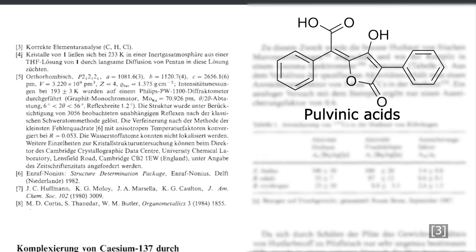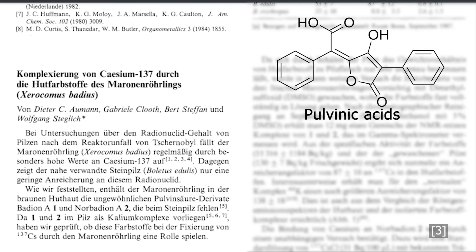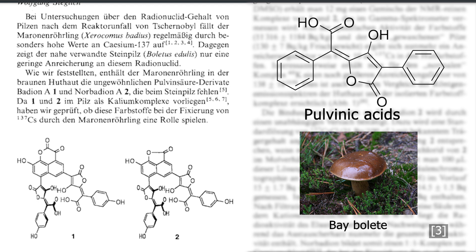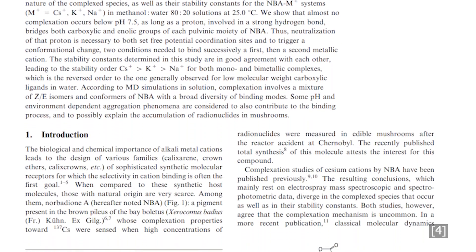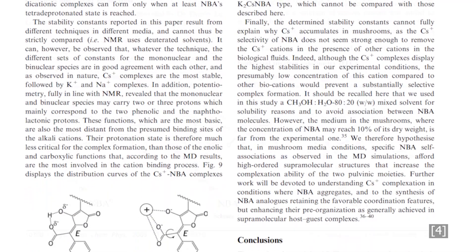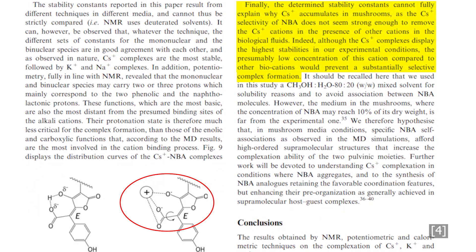Cesium-137 enters through pulvinic acids — compounds often orange or yellow, visible in the bay bolete, for example, which accumulates the highest amount of radiocesium. The color, however, is not a good indicator of radioactivity. In the bay bolete, derivatives like badion A and norbadion A form potassium complexes similar to cesium. The chemical similarity between non-radioactive cesium-133 and radioactive cesium-137 complicates this. Paul Cote et al. provides detailed insights into cesium, sodium, and potassium complexation, showing how norbadion A can exist in various forms depending on pH. They conclude that the stability of the cesium–norbadion A complex is insufficient to explain the high Cs-137 accumulation in mushrooms, indicating that there is much more to be discovered.